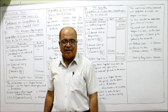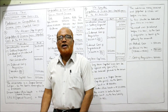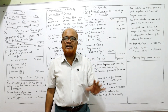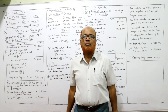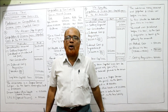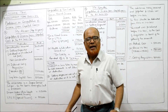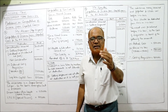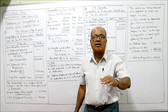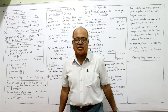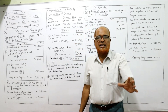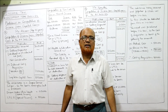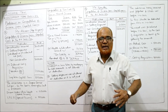Welcome to my channel. I'm Hashim Ali Khan. So far we have completed six problems on computing the income from capital gain. It's very simple: first we take the consideration received, deduct the selling expenses or transfer expenses to get the net consideration, then deduct the indexed cost of acquisition and indexed cost of improvement to get income from capital gain.